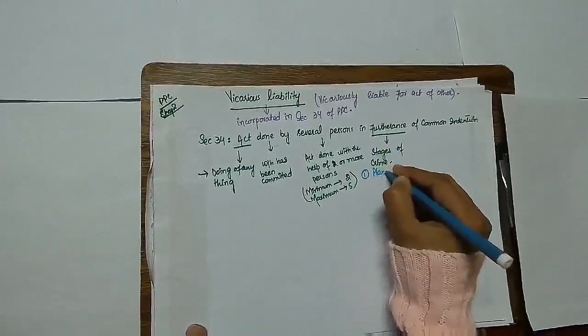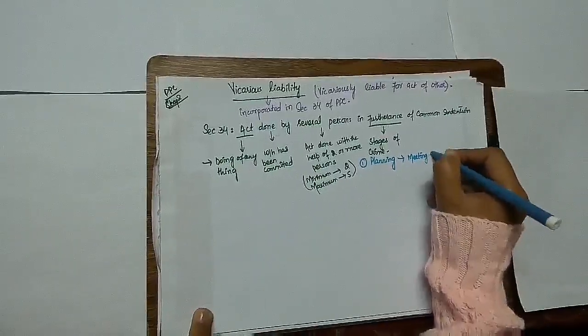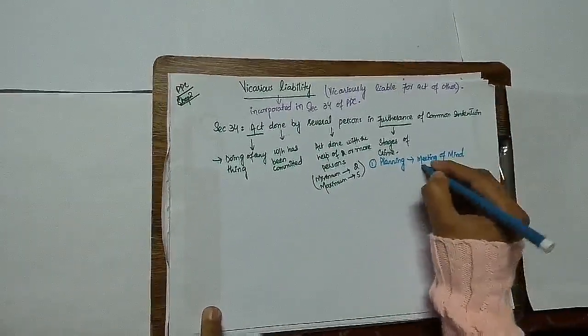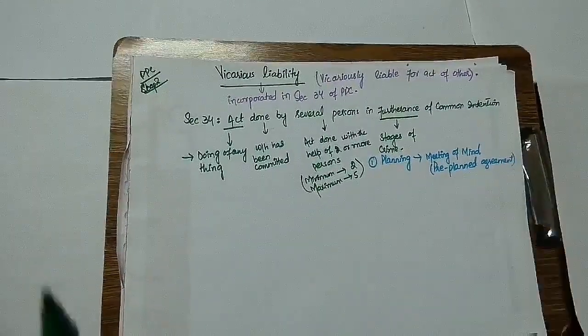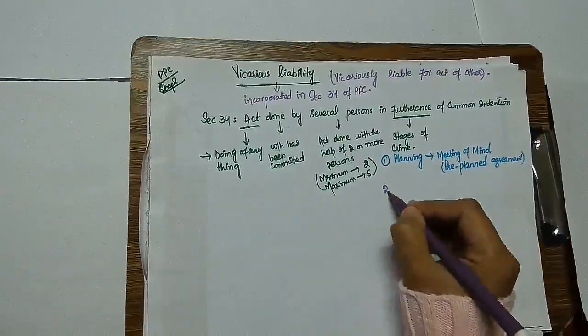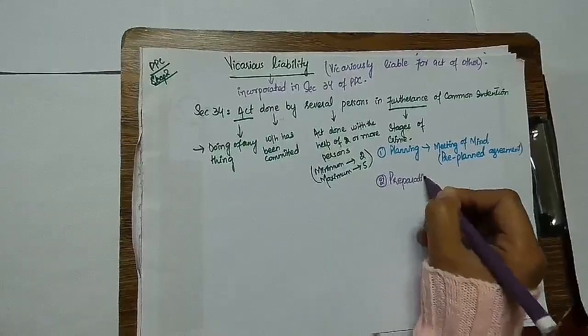And what does the word furtherance mean? Furtherance refers to stages of crime. There are basically four stages of crime. Number one, planning in which there is a meeting of mind, pre-planning, pre-planned agreement between co-accused. Next is preparation.